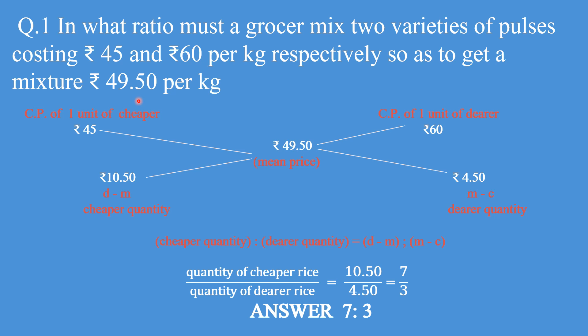So a grocer has two types of pulses — one costs 45 and the other costs 60. He is mixing them and selling. The mean price is given as 49.50. The question is in what ratio must he mix the two varieties of pulses. We will make a basic table: cost price of 1 unit of the cheaper variety is 45, cost price of 1 unit of the dearer variety is 60, and the mean price is 49.50.